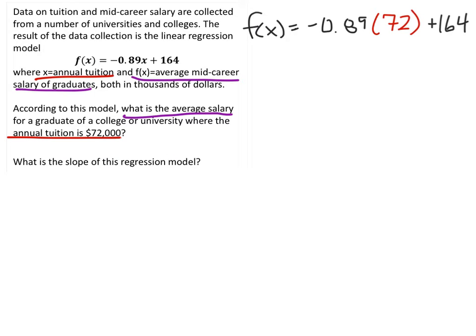So I've rewritten the equation up here, except notice, instead of X, I have this 72, and I should replace it here as well. So F of 72 equals negative 0.89 times 72 plus 164. So using the order of operations to solve this,